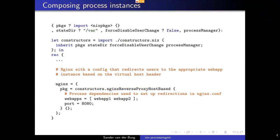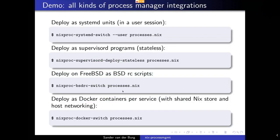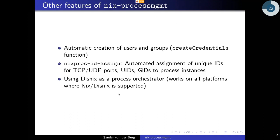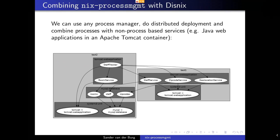I basically used one single specification to deploy the system for multiple process managers. There are lots of more interesting combinations possible: you can also deploy in FreeBSD as BSD rc scripts, and you can even deploy Docker containers for the process instances. There are lots of other features I haven't explained — you can also create users and groups so that processes run as unprivileged users, you can automatically assign port numbers, user IDs and group IDs. You can also combine the Nix process management framework with Disnix, and the nice thing is that you can deploy processes to networks of machines and combine them with things that aren't processes. For example, Apache Tomcat can be managed as a process, but you can also deploy Java web applications to that running Tomcat instance, which is very nice for deploying very heterogeneous systems.